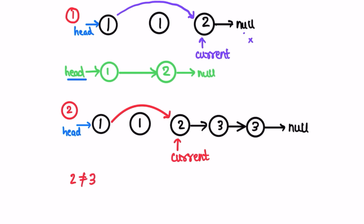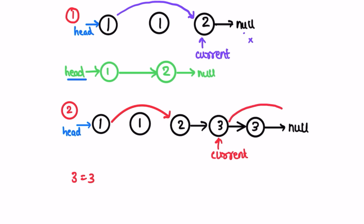Current is not equal to null and current.next is also not equal to null, so we proceed. We check if current.val equals 2 — it is not equal to current.next.val which is 3, so we simply move the current pointer to current.next. Now current.val is equal to 3 and current.next.val is also equal to 3, so we point current.next to current.next.next.